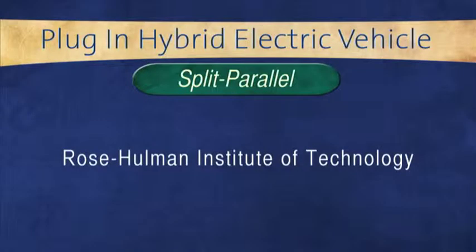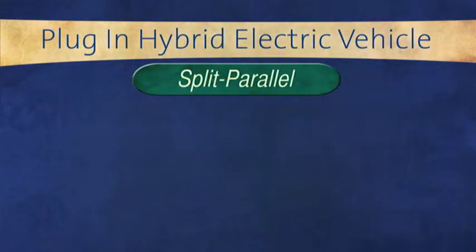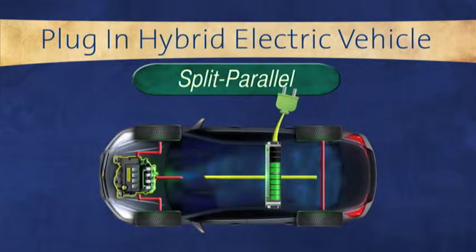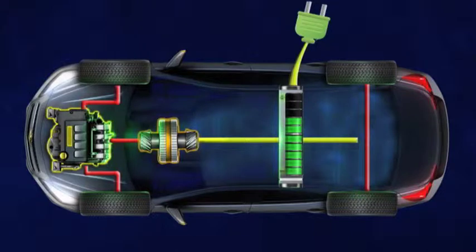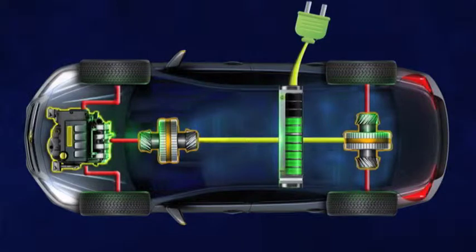The first sub-architecture is a split parallel hybrid. This architecture utilizes two electric motors for two different types of functions. The first motor performs functions such as engine start-stop and battery charging. The second electric motor provides tractive power to the vehicle independent of the first electric motor, which powers the vehicle down the road.